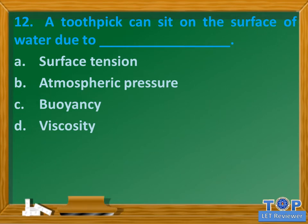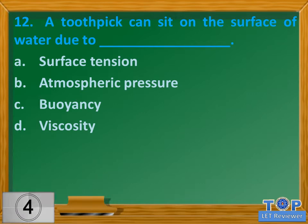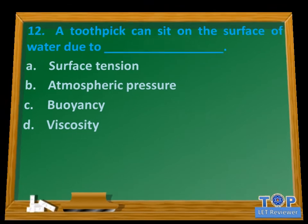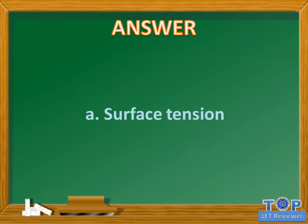Question number 12. A toothpick can sit on the surface of water due to blank. A. Surface tension. B. Atmospheric pressure. C. Buoyancy. D. Viscosity. Answer: A. Surface tension.